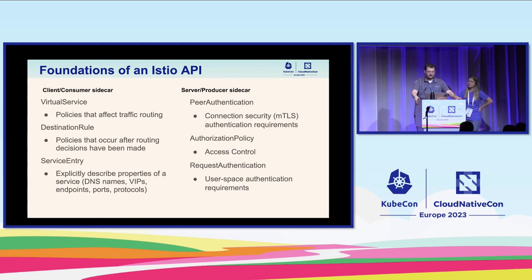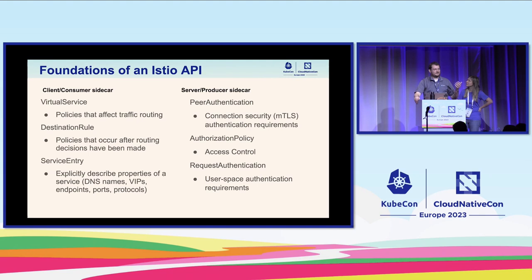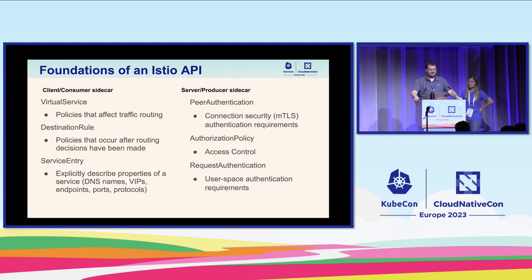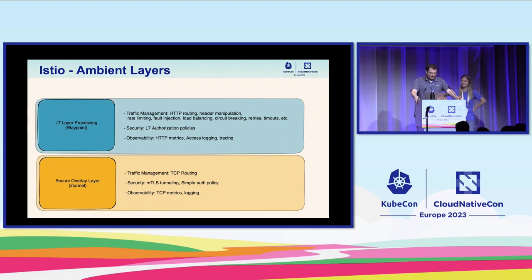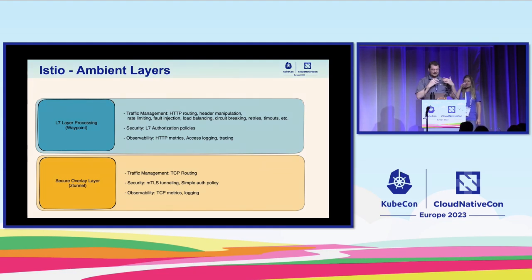On the destination pod side — the server or producer sidecar — APIs like PeerAuthentication, AuthorizationPolicy, and RequestAuthentication are inherently server-side. It makes sense for a pod's sidecar to determine who gets in; you would not delegate that to the requester. So with sidecar-based Istio, that is your mental model of the API and where it is implemented.